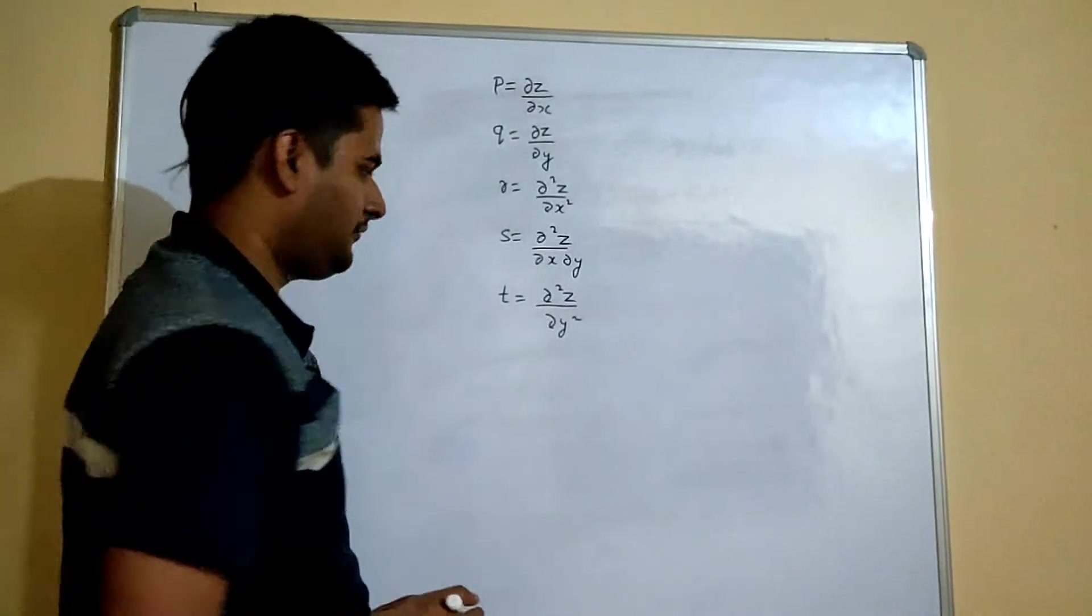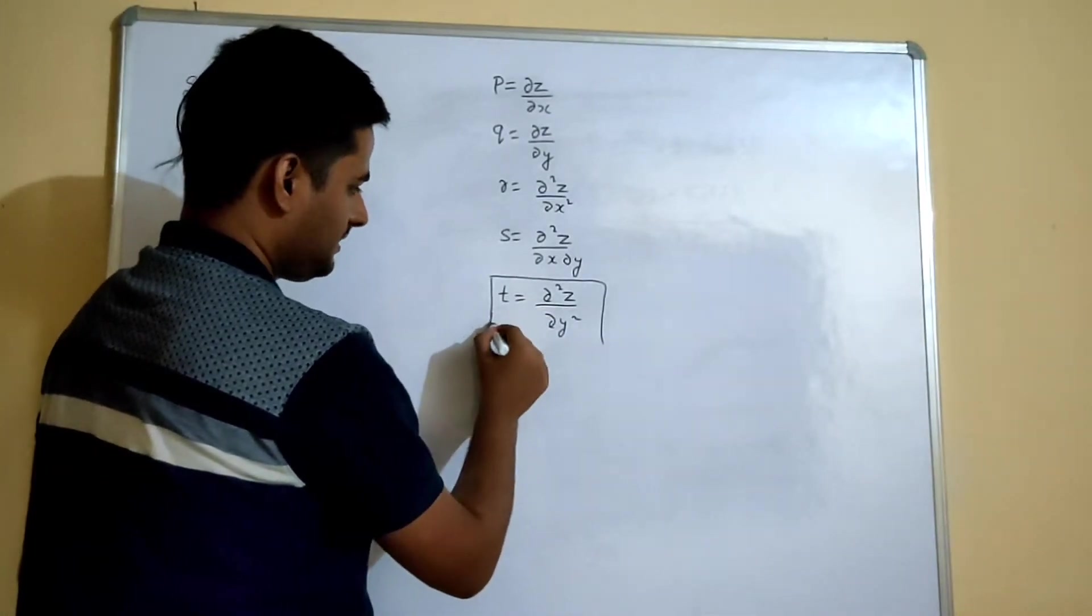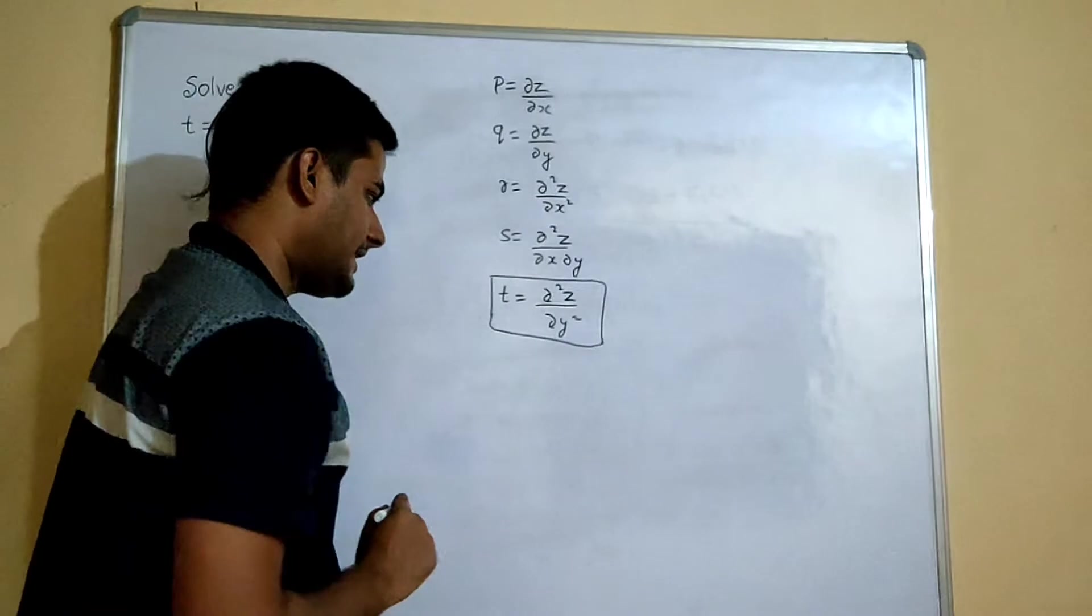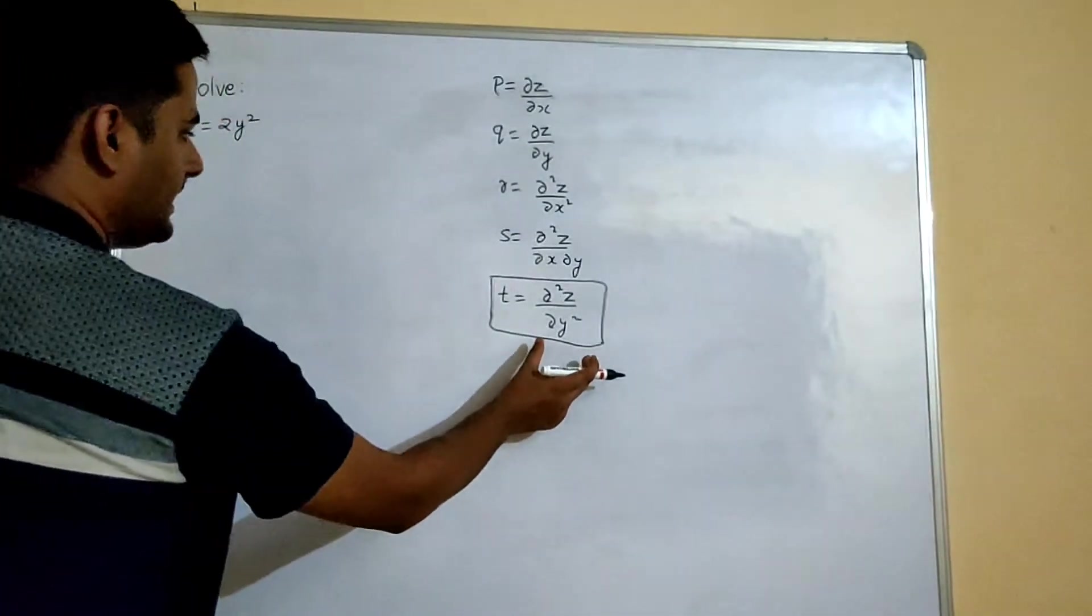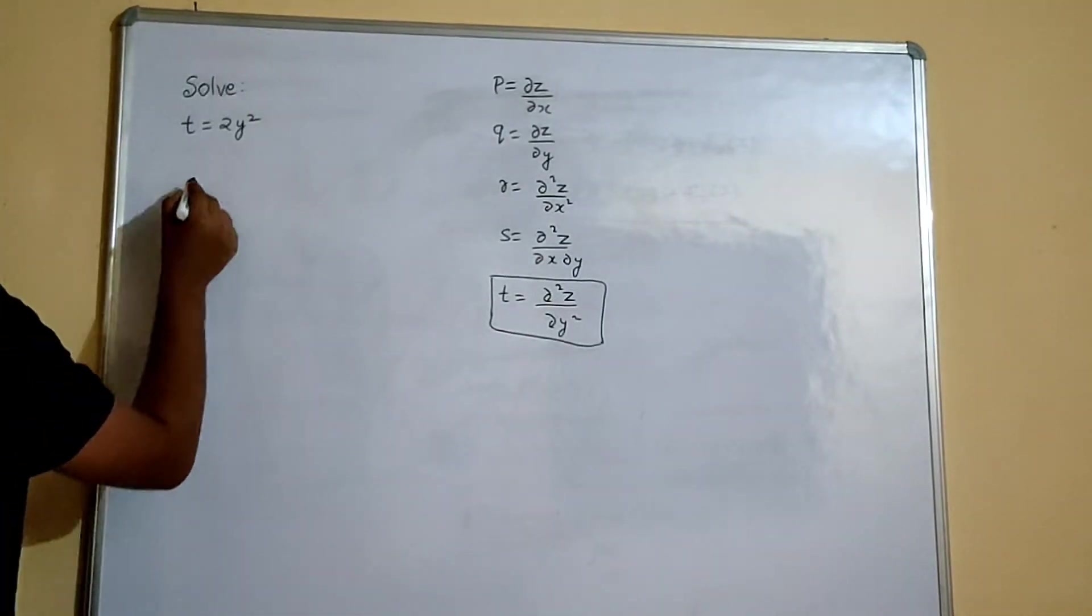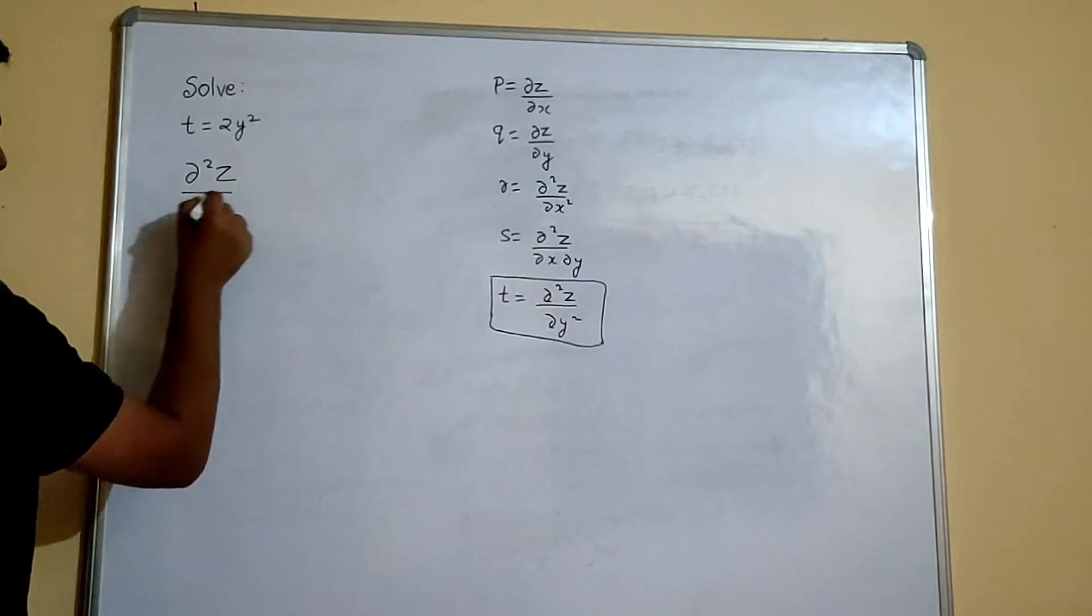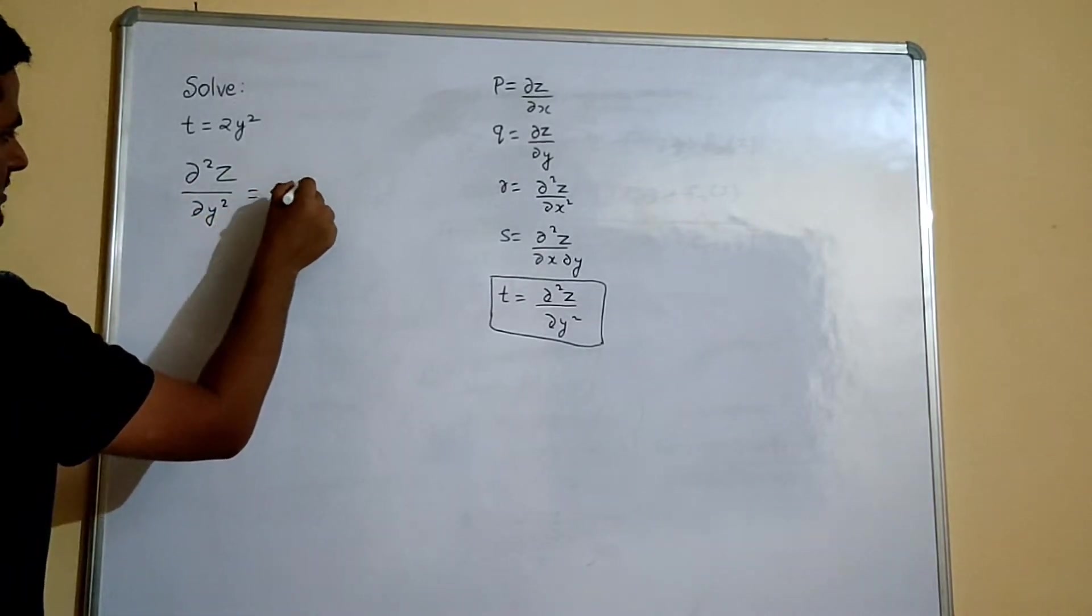So in the current question we are concerned more about this T, which is del 2z by del y square. So if you plug in the value of T into our equation, we will get del 2z by del y square equals to 2y square.